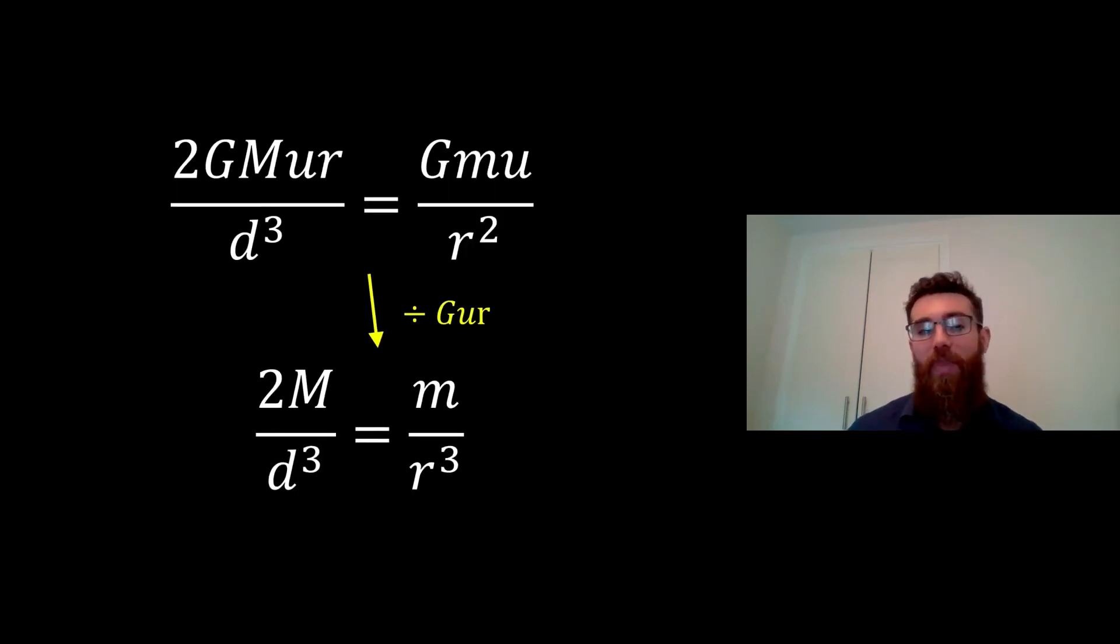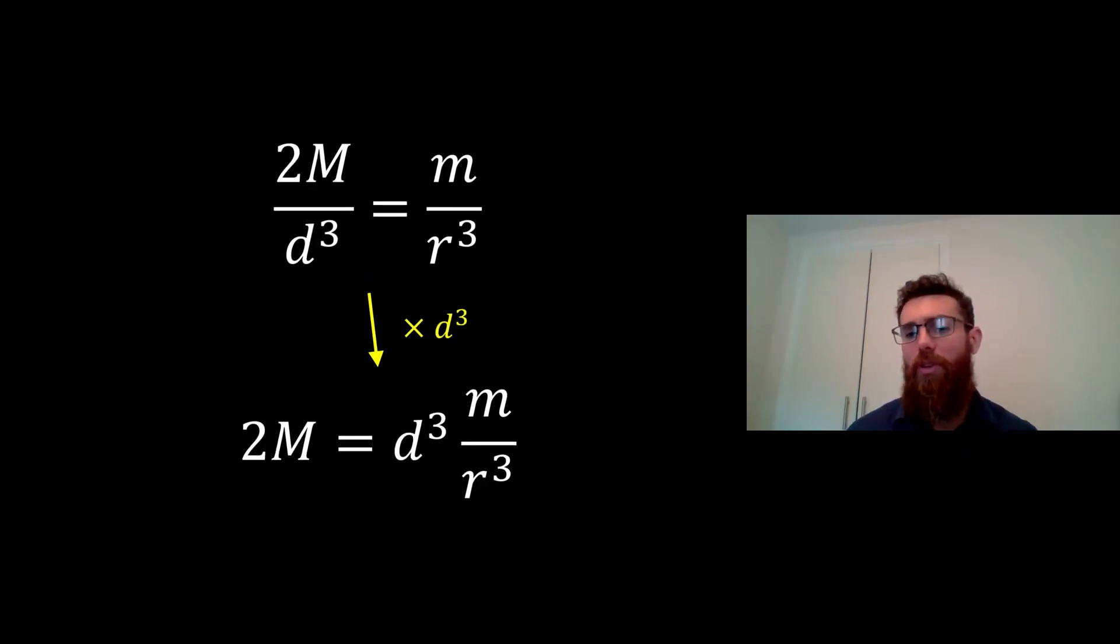Now what we can do there is we can start to rearrange it so we can get an expression for d. To start off with we can divide through by GUR. Now what that will do is it removes the gravitational constant, it will remove U, and we remove R from the left hand side. We can then multiply through by d cubed, and what that does is it removes the d cubed underneath the 2M on the left hand side and removes it onto the right.